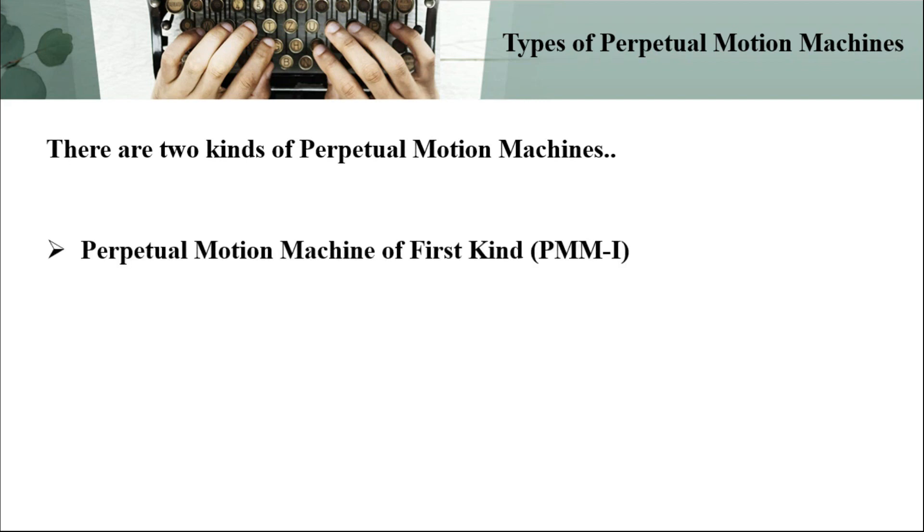How many types of perpetual motion machines are there? There are two kinds of perpetual motion machines: Perpetual Motion Machine of First Kind, also called PMM-I, and Perpetual Motion Machine of Second Kind, also called PMM-II.